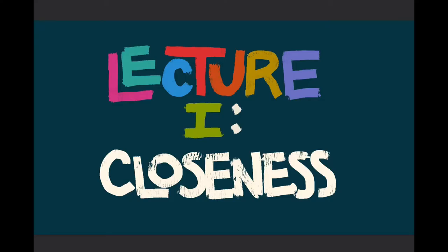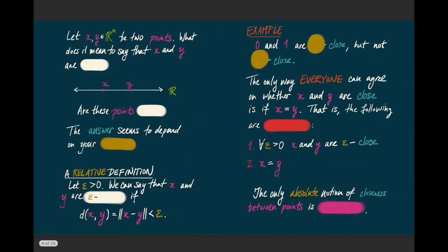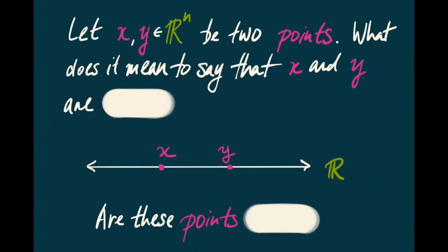Today our topic is going to be closeness. In topology, we are usually interested in getting rid of the notion of distance, but preserving the idea of closeness. So today we're going to understand what the notion of closeness that we want to preserve is and how it operates. To begin, let's imagine that we have two points, x and y, in the same Euclidean space Rn. What could it mean to say that x and y are close?